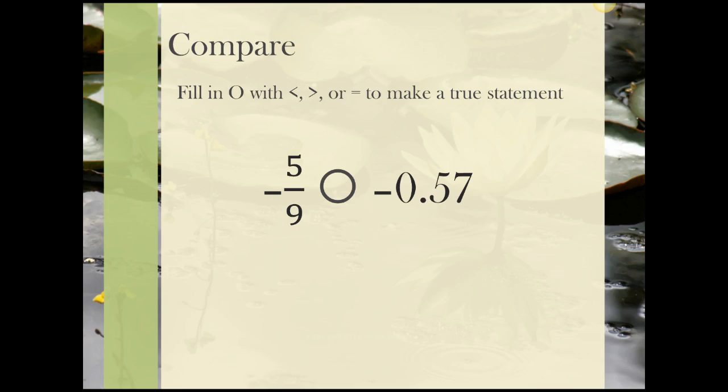I could also write -0.57 as the fraction -57/100. I then would cross-multiply, and I get 500 on this side, and that would be a -500. And on the other side, I have 9 times 57, which is 513, and that also would be negative. -500 is larger than -513, so -5/9 is greater than -0.57.